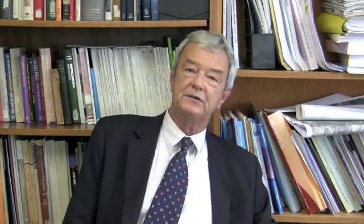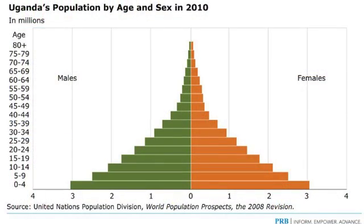Let's go back and look at a pyramid that actually is one. Here's Uganda, an African country where women average almost seven children each. Here we see a perfectly symmetrical pyramid getting bigger and bigger at the bottom. As those bottom bars move up into the ages where couples begin to have children, the population of Uganda will grow — and if they continue to have almost seven children, Uganda will really begin to resemble what we call a population explosion.